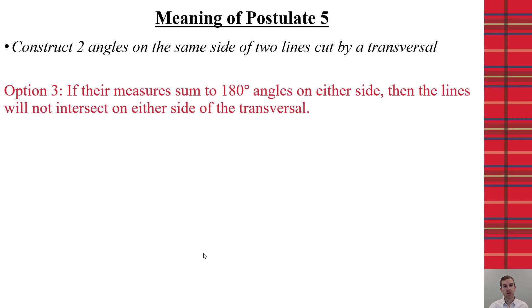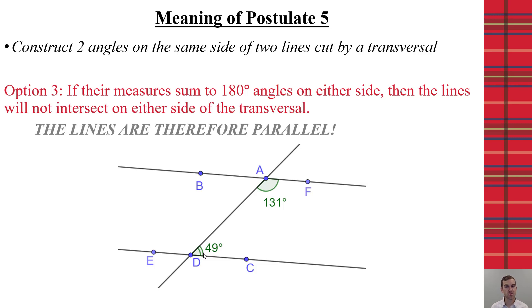However, if those two same side interior angles sum to 180 degrees, then those two lines never intersect. And what this proves then and gets to the foundation of the postulate is that it's possible to create two parallel lines in plane geometry.